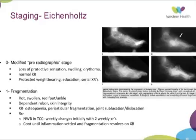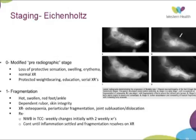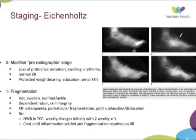The first true stage of Eichenholz is the fragmentation or hot swollen stage. The foot presents with literally a hot swollen foot and ankle, dependent rubor, and compromised skin integrity. X-ray can show osteopenia, periarticular fragmentation, frank subluxation and dislocation of joints. Treatment at this stage is non-weight bearing in a total contact cast, changed weekly until the swelling and temperature come down. This fragmentation period can take quite a while — months even — so you need to develop a very good relationship with your orthotist but also with the patient and their family, as this is a very demanding time.